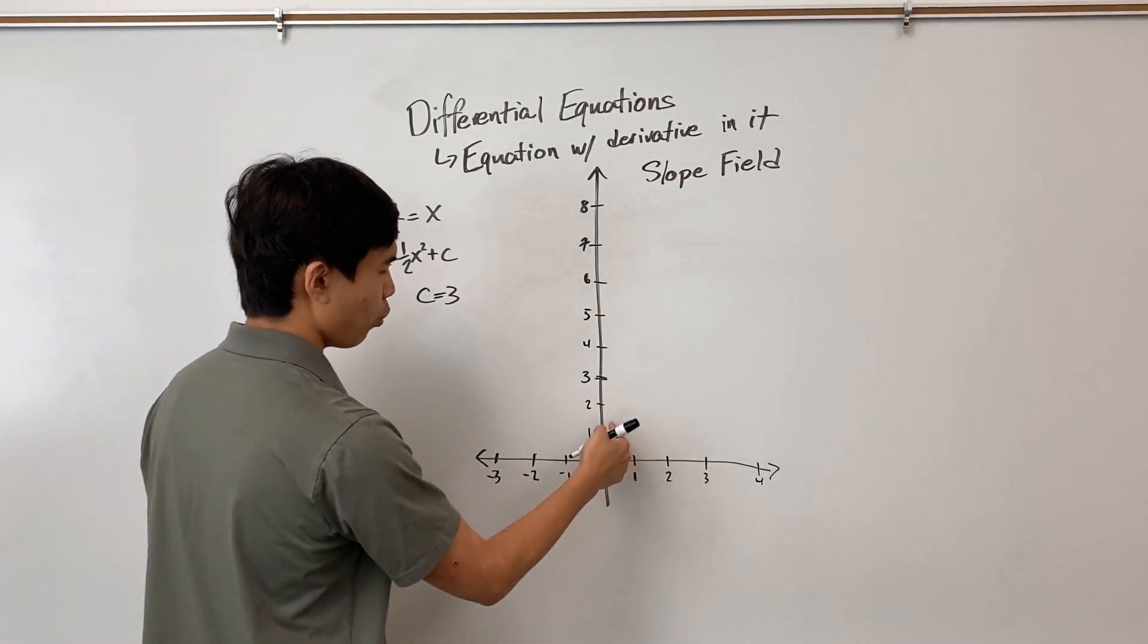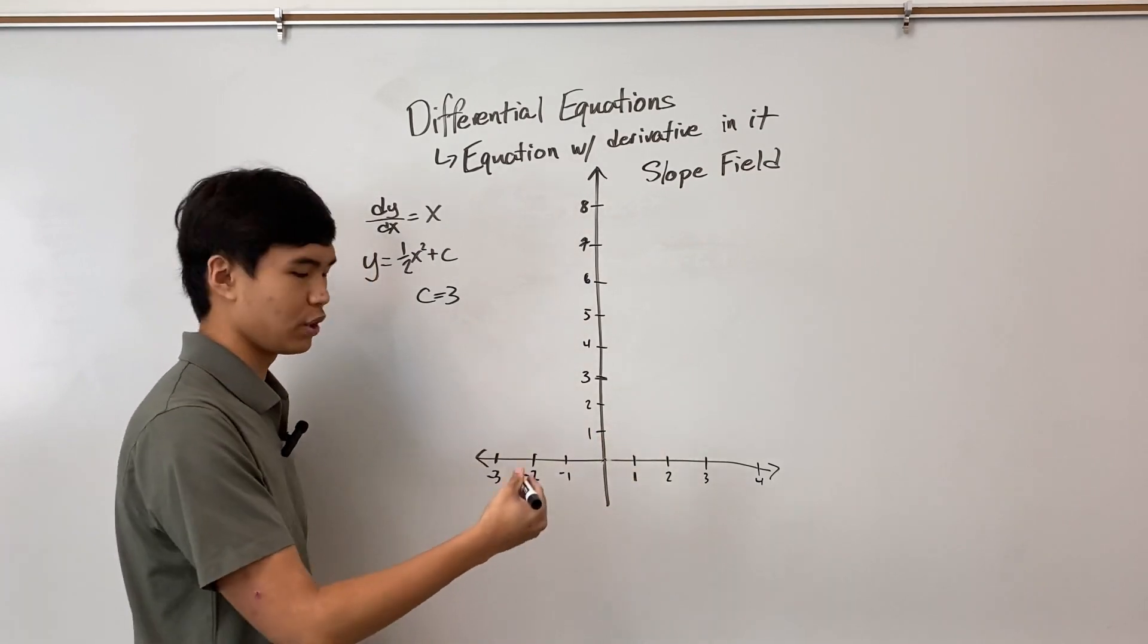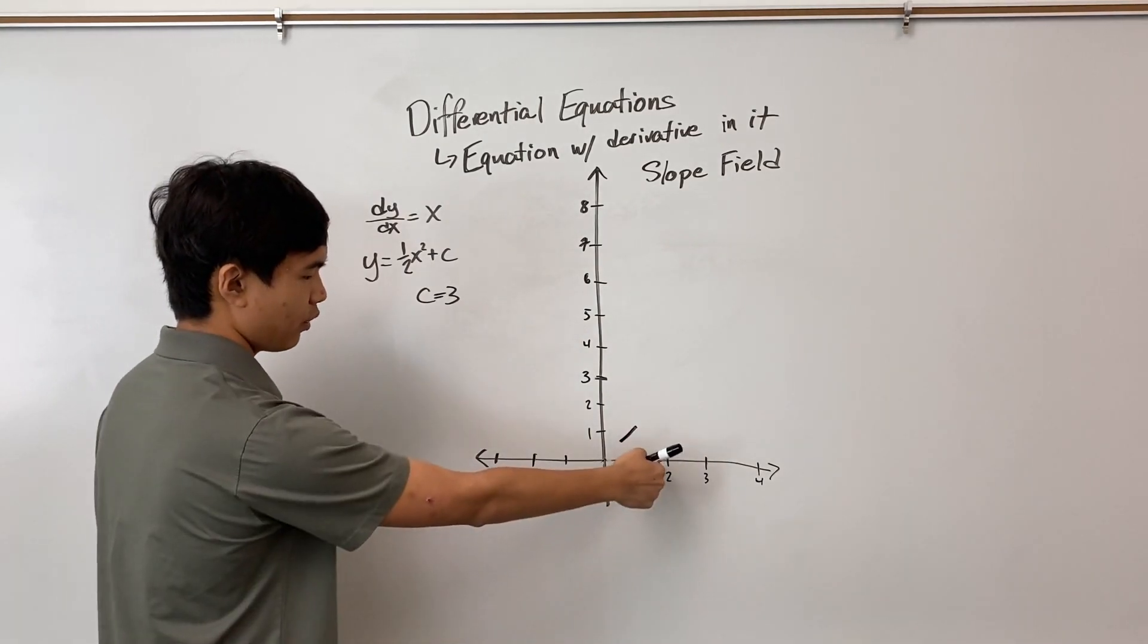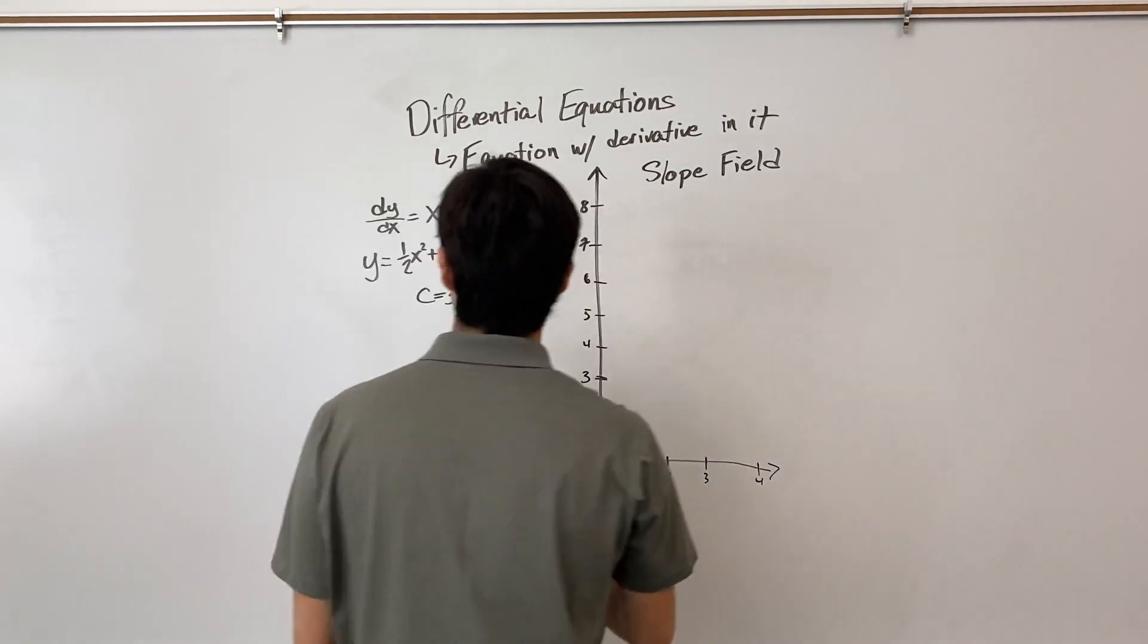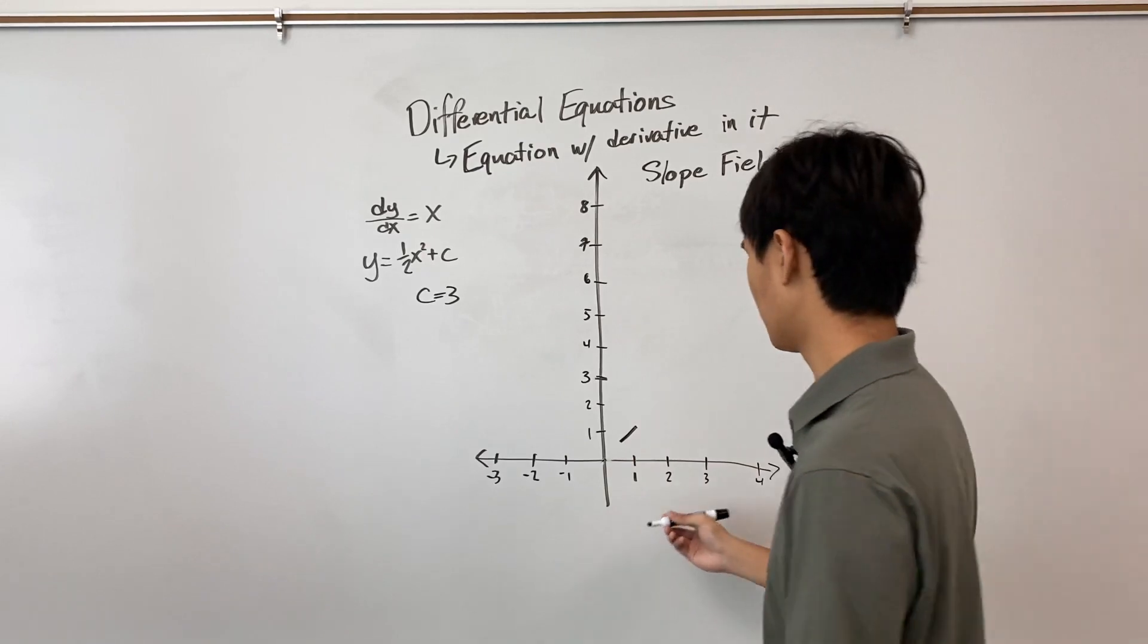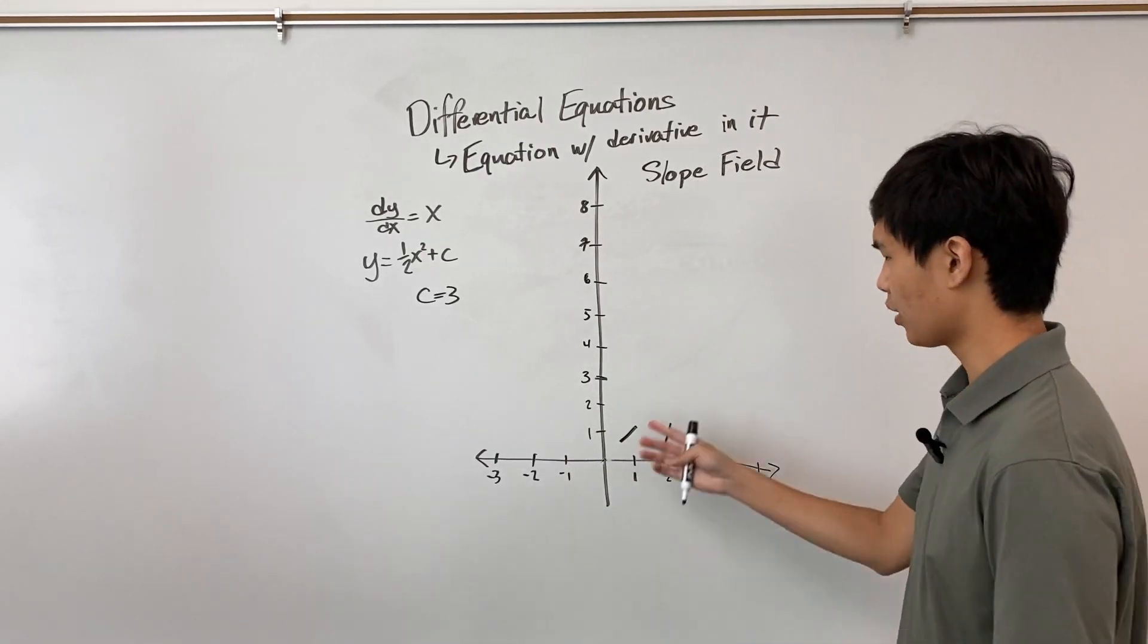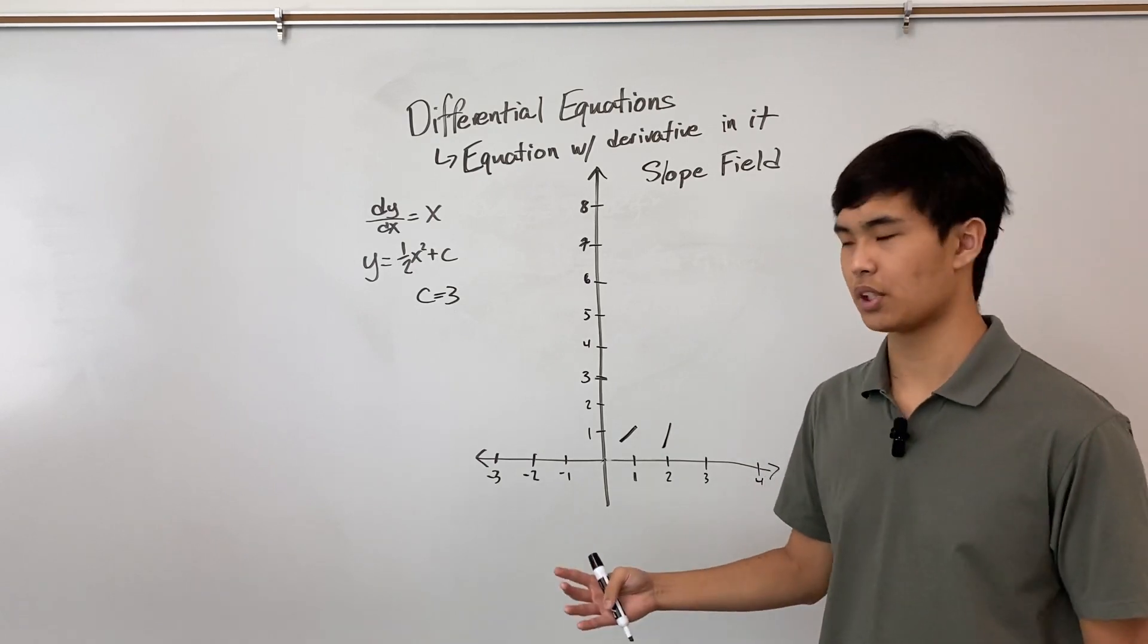So here at (1,1), the x coordinate is 1. So we have a slope of 1. And here at (2,1), our x coordinate is 2. So we have a slope of 2. And notice, we're not plotting points anymore, we're plotting slopes, and we're plotting lines.